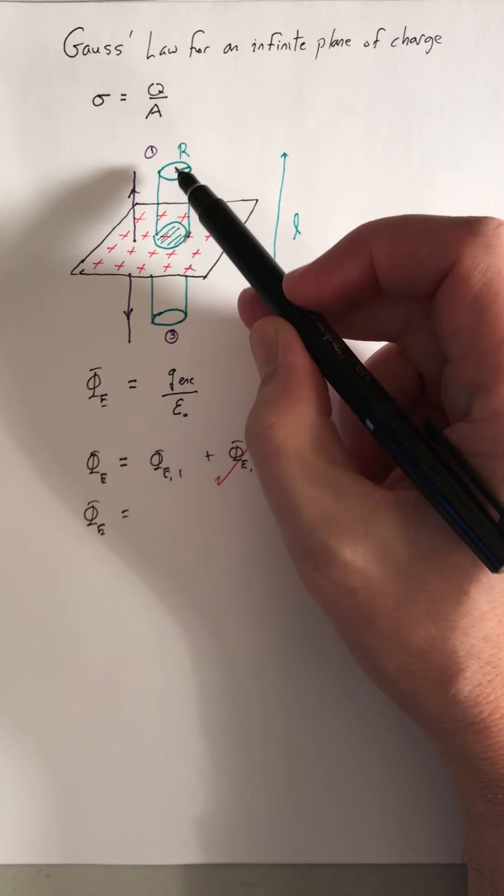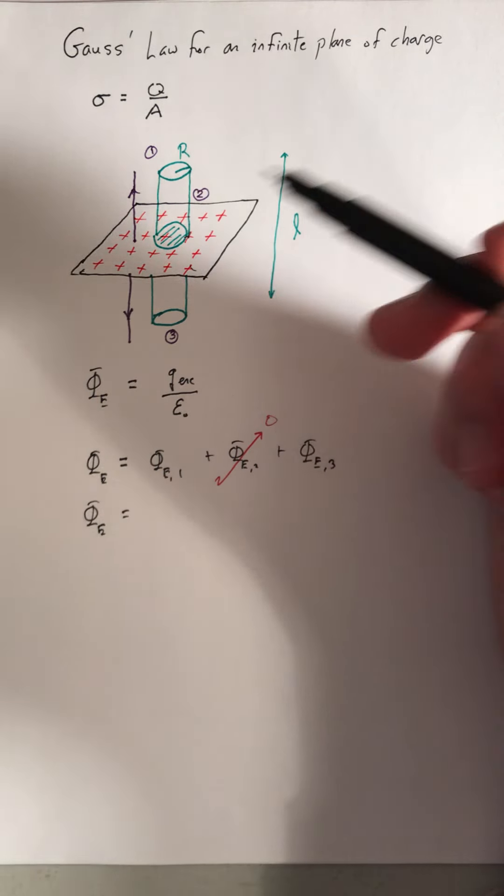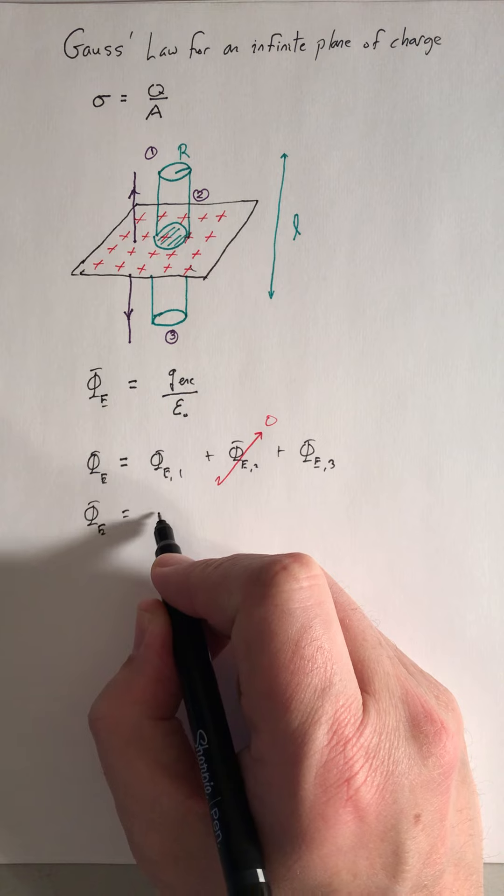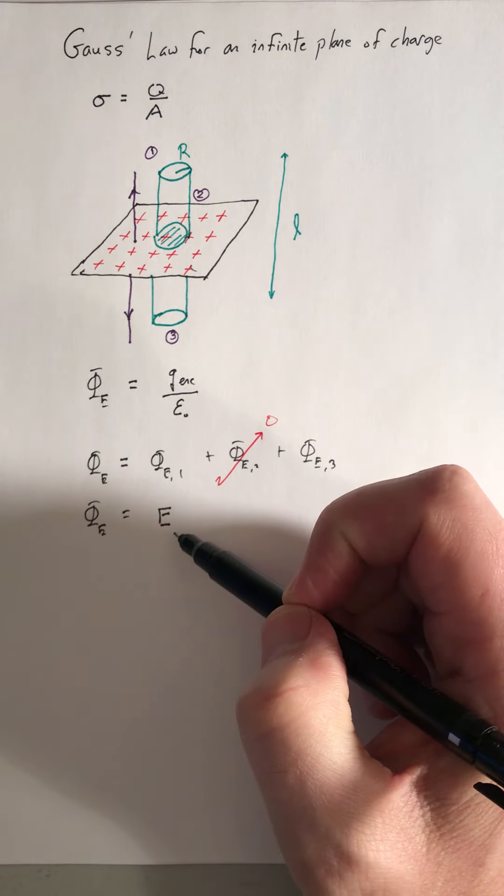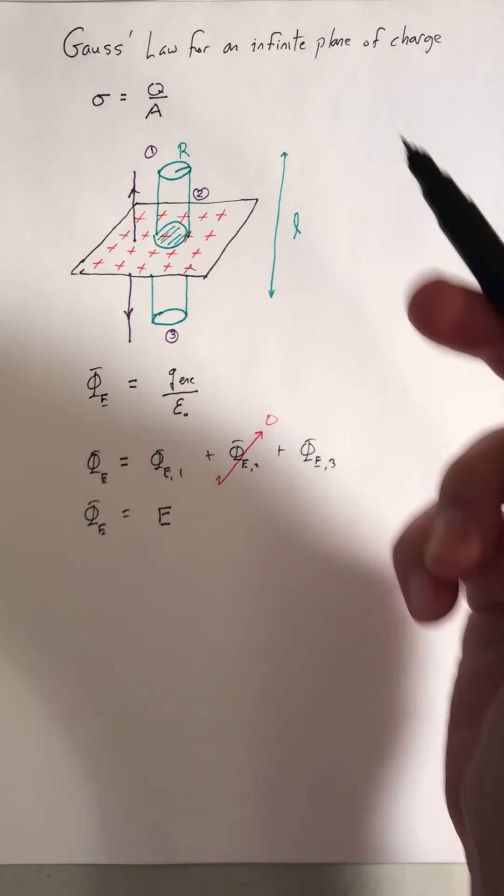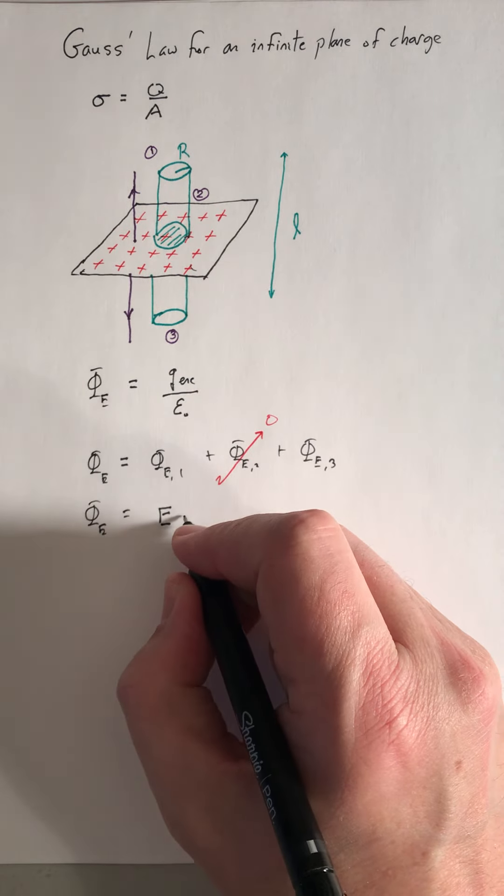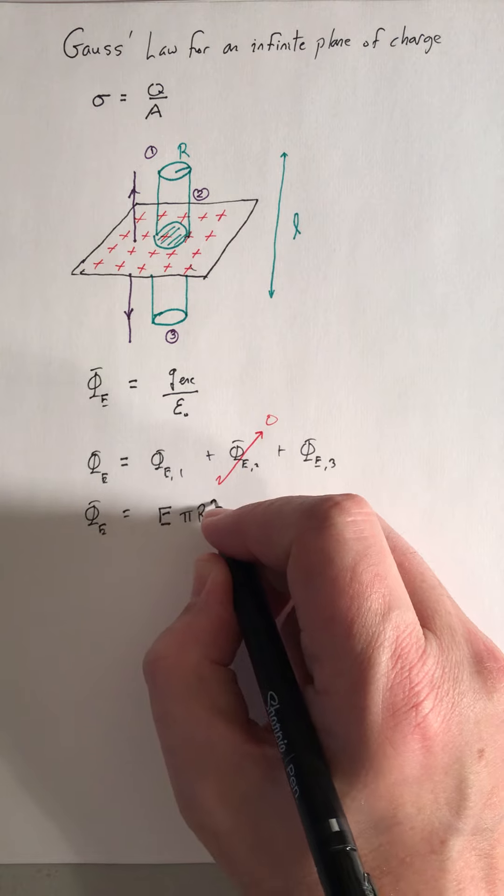So the flux of the electric field through the top is going to be the magnitude of the electric field at the top. It's going to be pointed out times the area of the top, which is pi r squared.